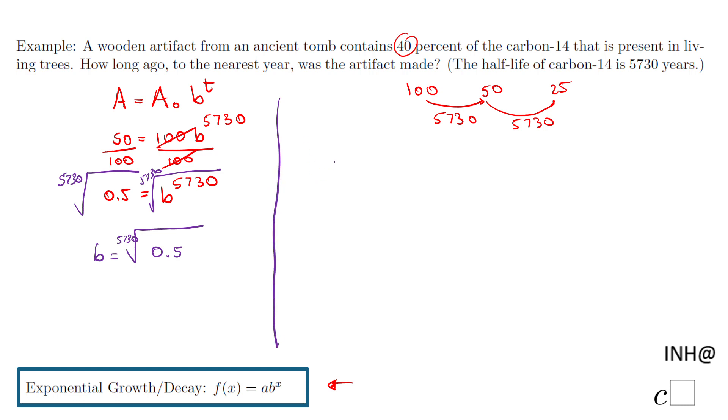We're going to move to the next part. I'm going to use this equation again - A = A₀, and I'm going to replace b with this radical (5730th root of 0.5), then to the power of t. I know it doesn't look nice, but it is what it is.